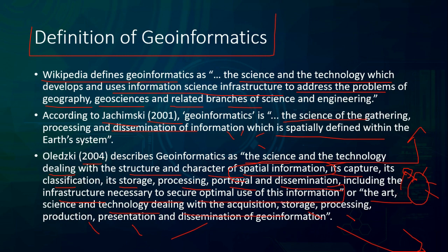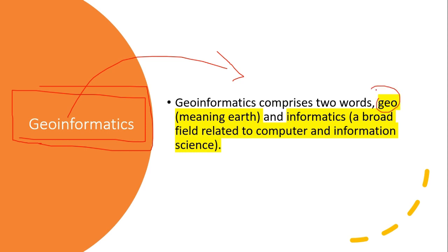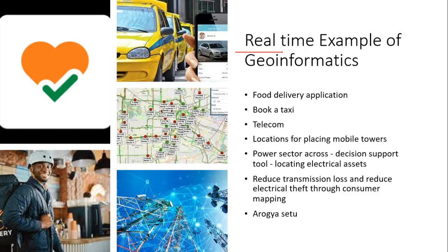To summarize: any information related to earth spatial data that we collect, store, and produce different results from is called geoinformatics. The term is made up of two parts — 'geo' meaning earth and 'informatics' meaning the broad field related to computer and information science — so geoinformatics is essentially information about the earth.